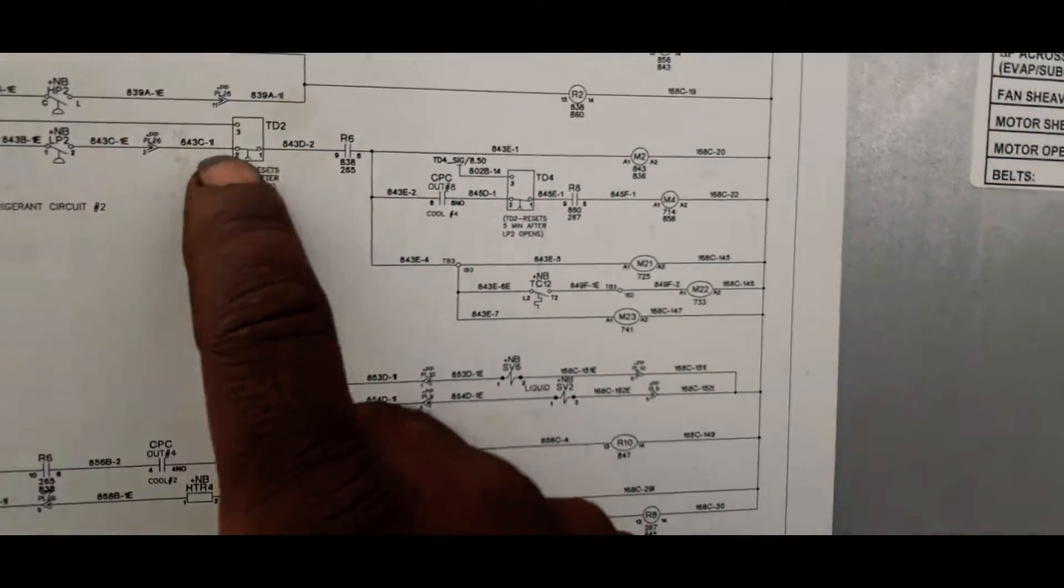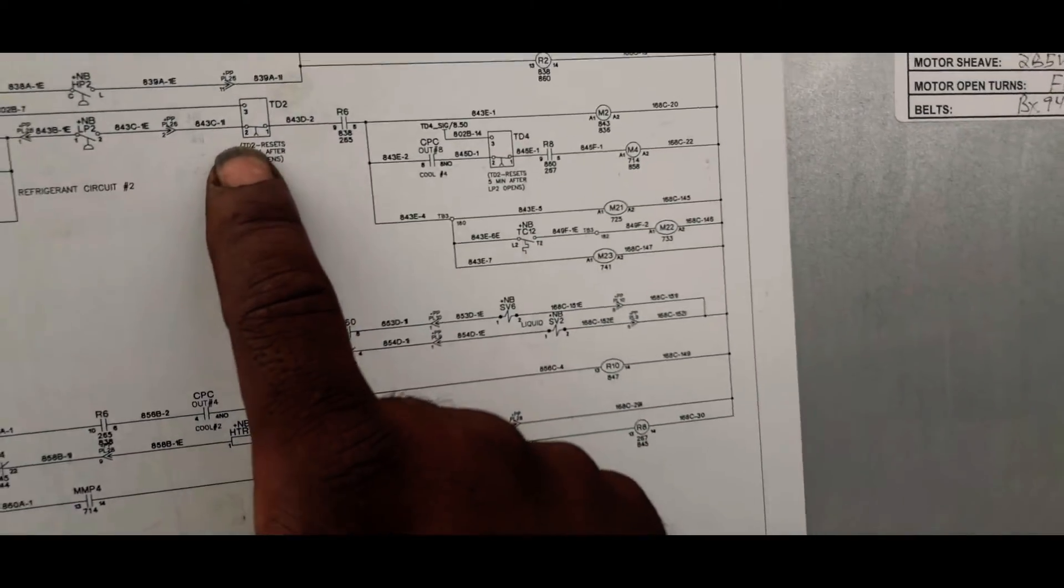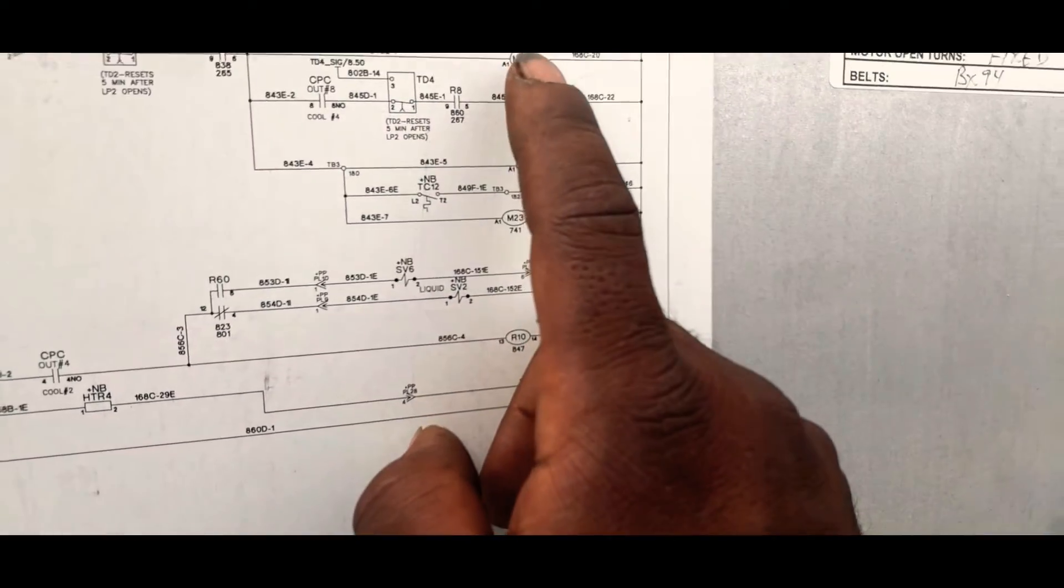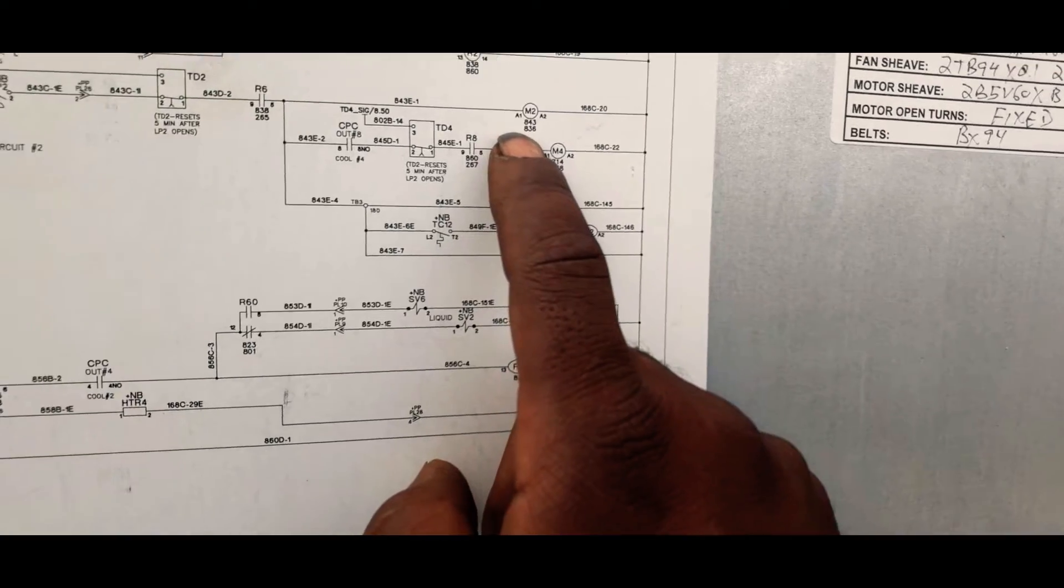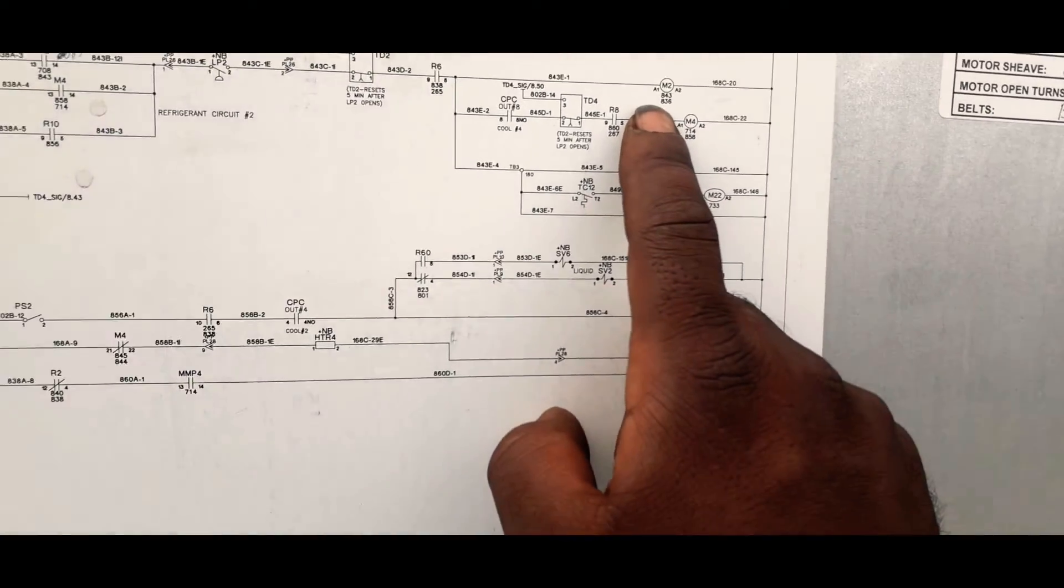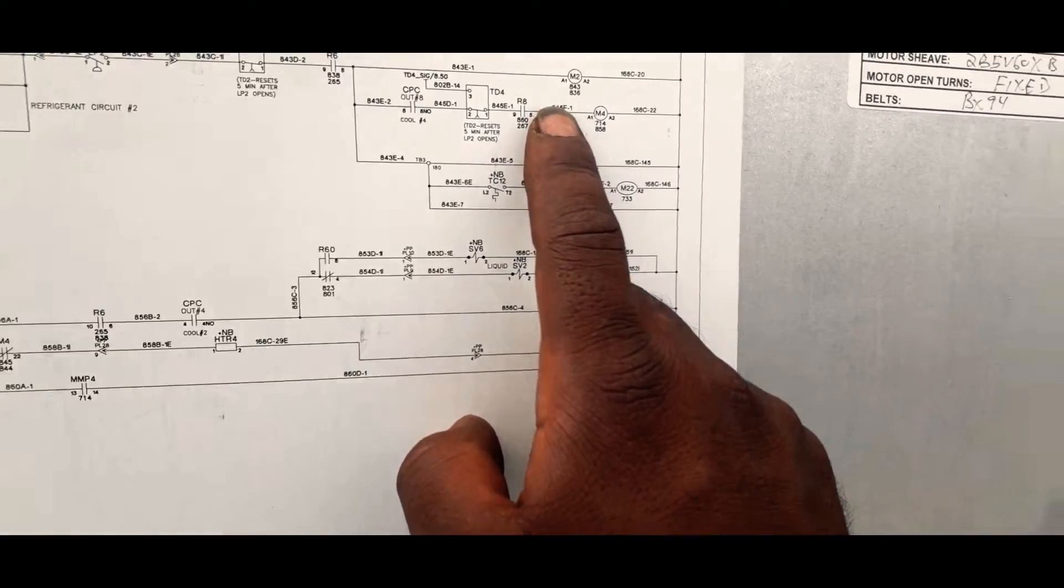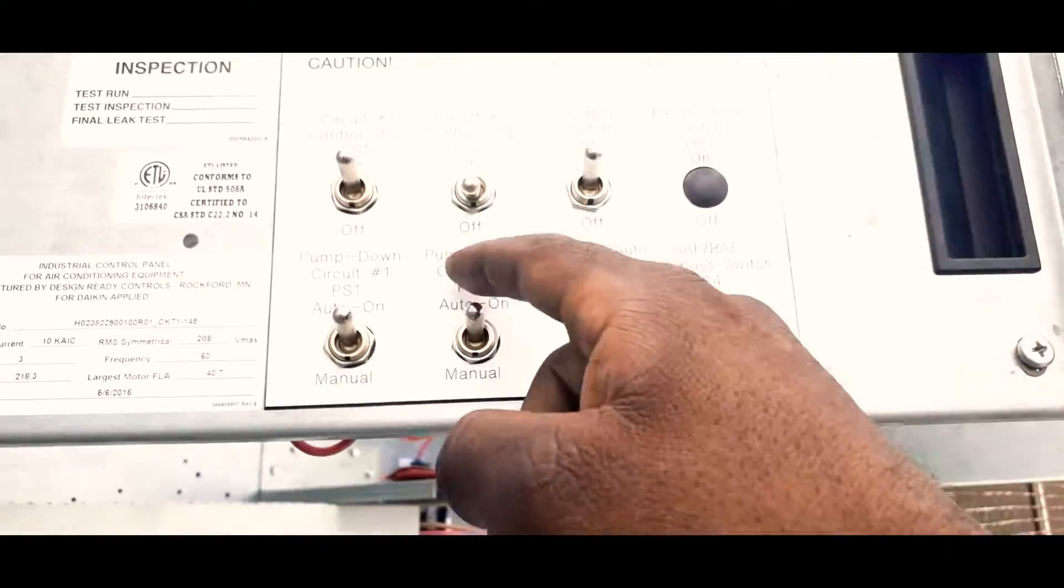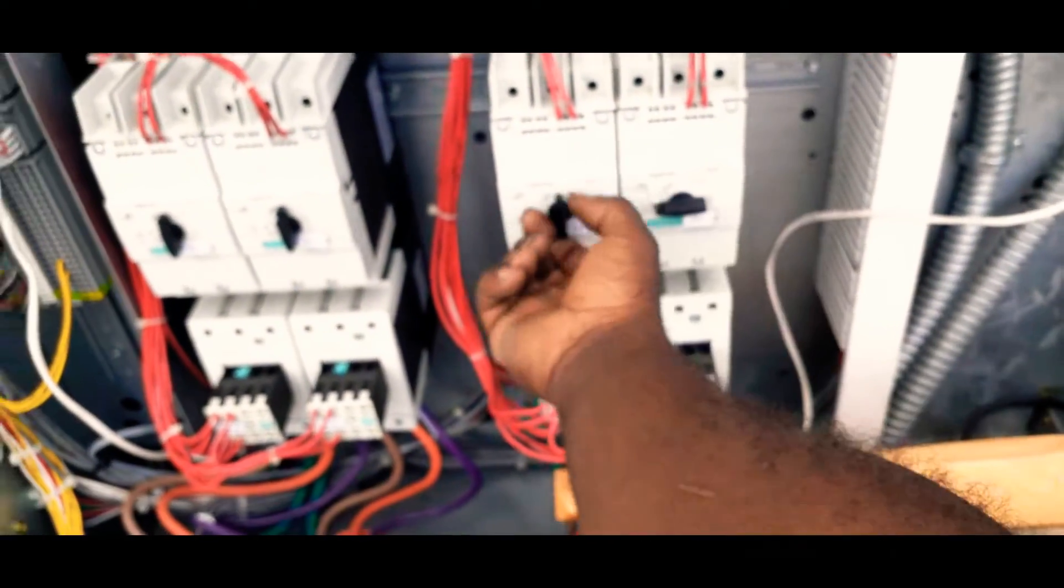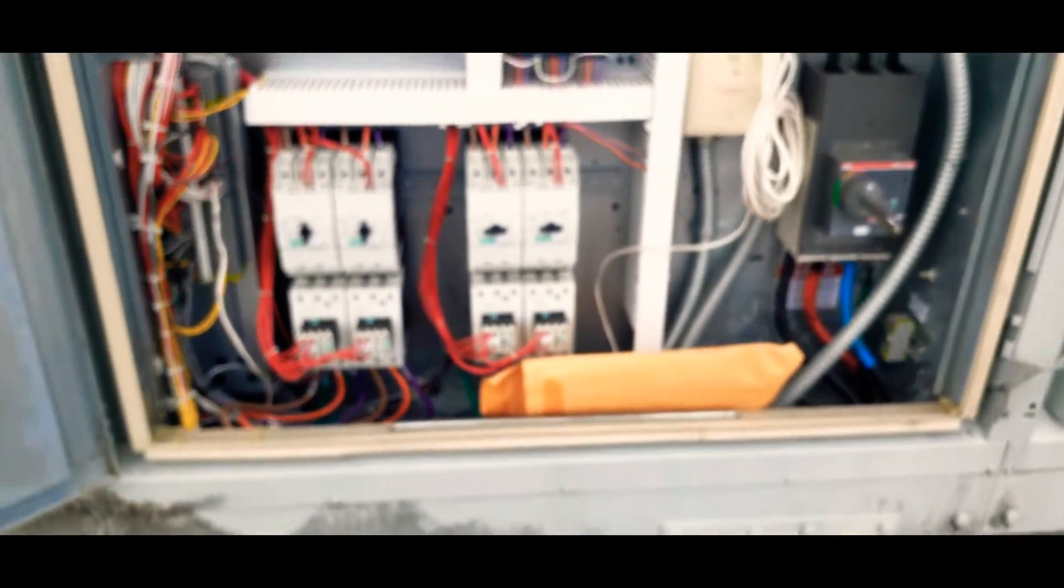Here, time delay two, M2, that's my contactor coil. So I need to check my low pressure switch. Just turn off voltage, I'm gonna check my low pressure switch out right quick.